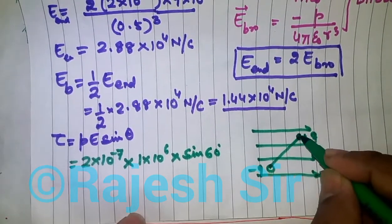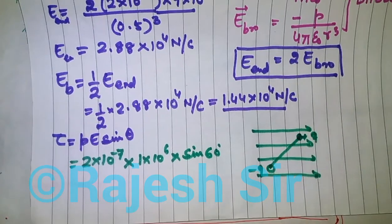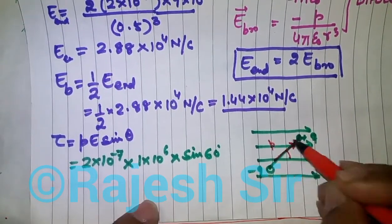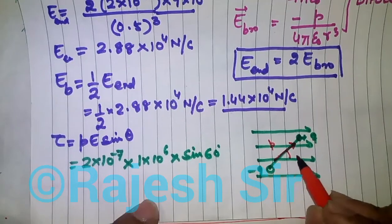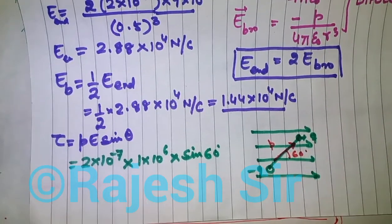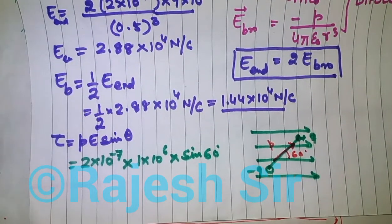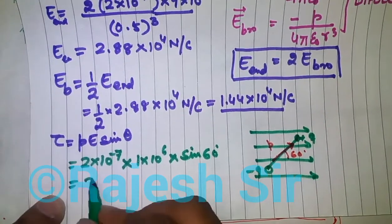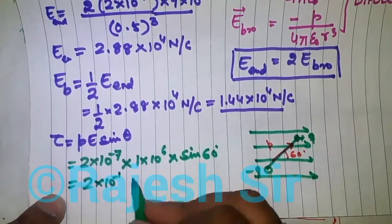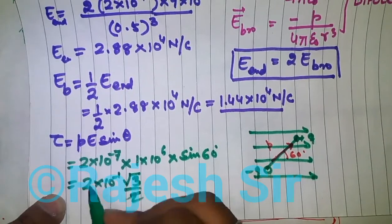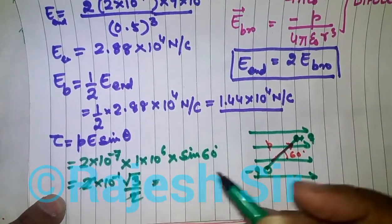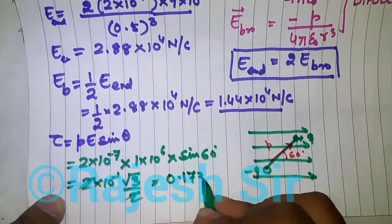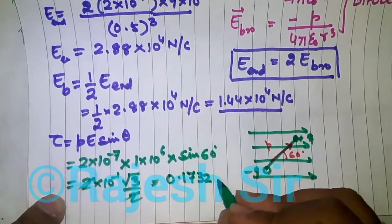When the dipole is rotated by 60°, the dipole axis makes an angle of 60° with the uniform electric field, so the angle between the dipole moment p and the electric field is 60°. Since sin 60° = √3/2, we get 2×10⁻¹ × (√3/2), giving √3 × 10⁻¹ = 1.732×10⁻¹, so the torque is approximately 0.173 newton meter.